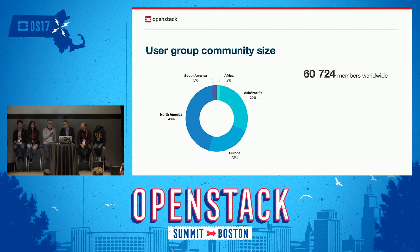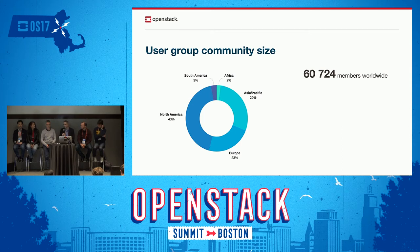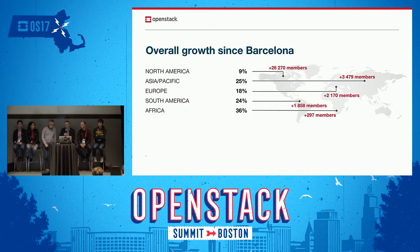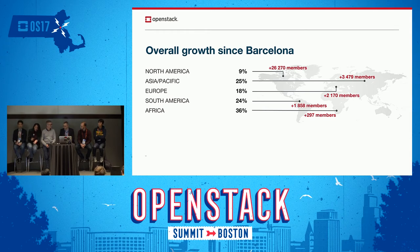Now some new data about the community. We have fantastic growth, and I think the user group community size is very well balanced between the continents of the world. Maybe we can improve somewhere in South America and in Africa. Looking at the overall growth since Barcelona, North America has fantastic numbers and everything is growing very well. North America is the largest base so the percentage growth looks smaller — 9% — but that represents 26,000 members. It's easy to grow when you're small.